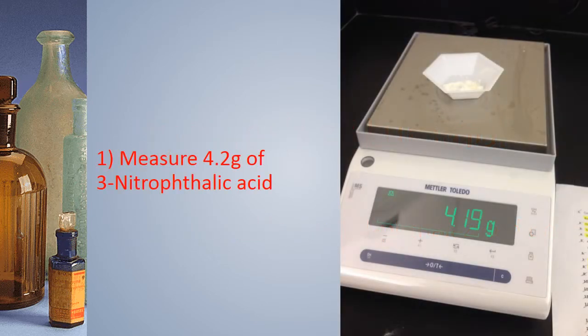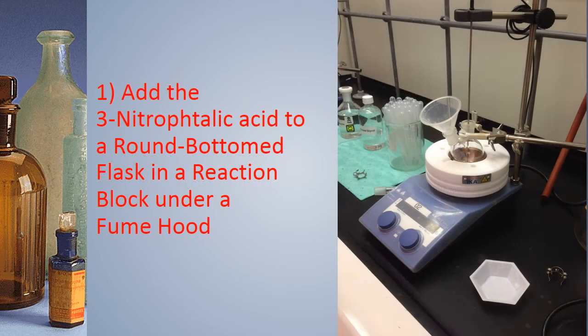The first step is to measure 4.2 grams of 3-nitrophthalic acid. We add this 3-nitrophthalic acid to a round bottom flask in a reaction block under a fume hood.